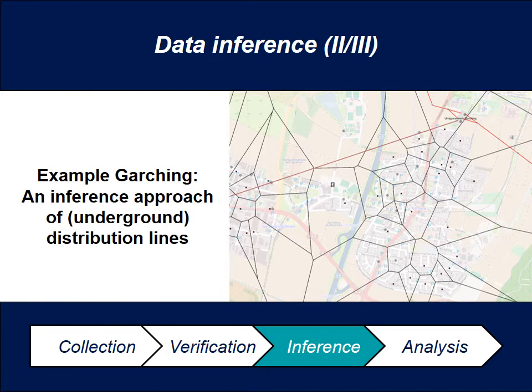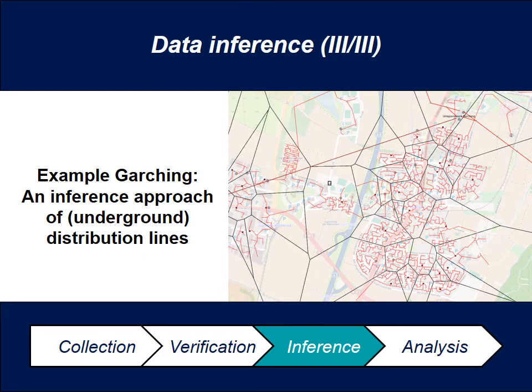This is an example for the city of Garching to do an inference on how the power lines could look. We have the transformers, and the first thing we do is a Voronoi partition in order to segment the area and assign transformers that are supposed to supply a certain amount of houses. Once you have the segmented area, you connect the transformer to all the houses in each section.